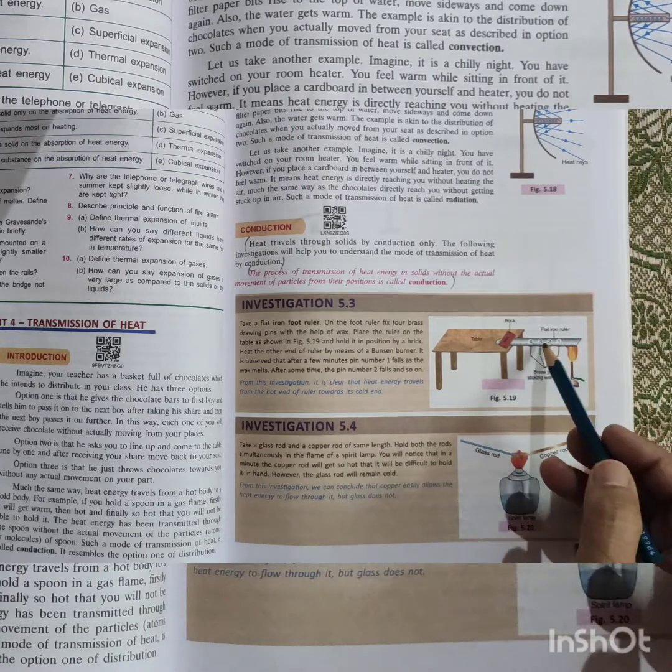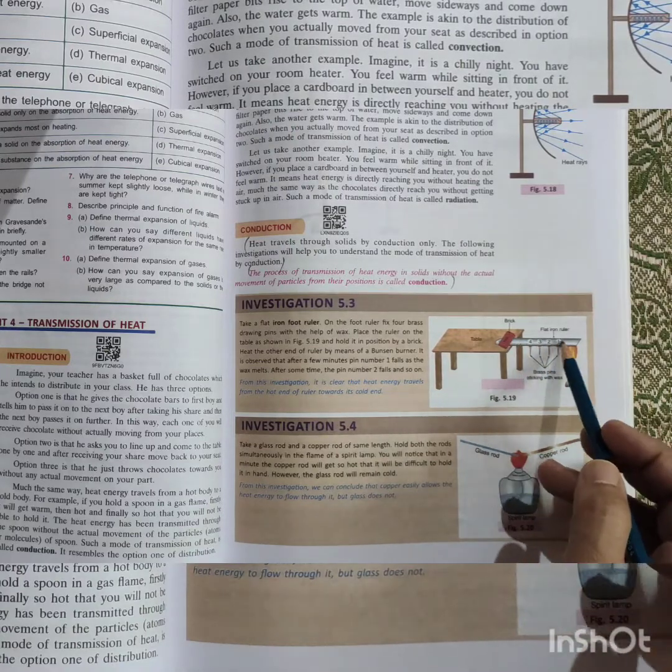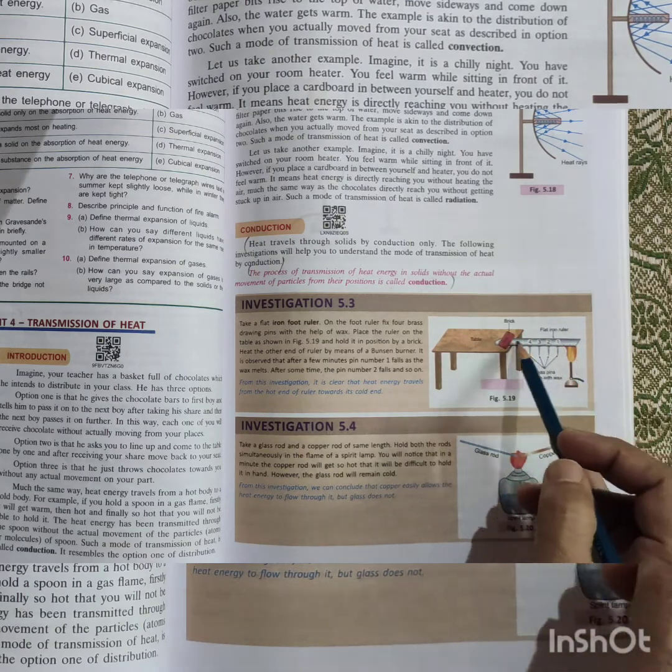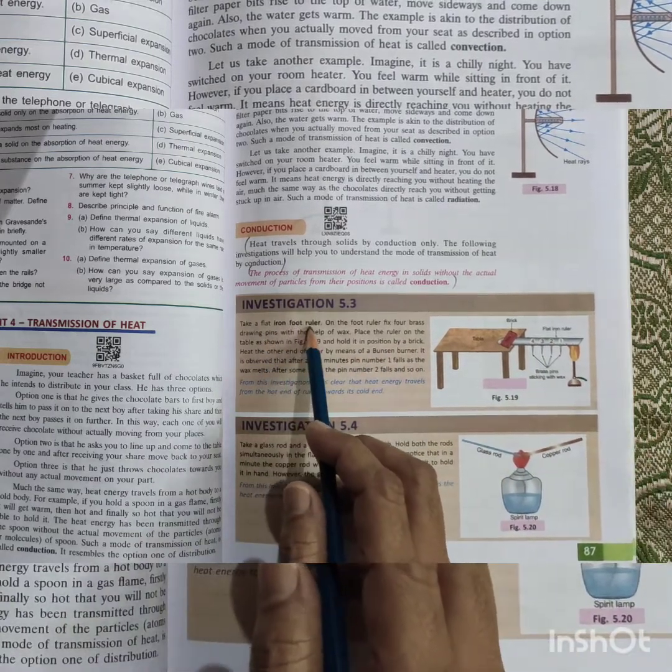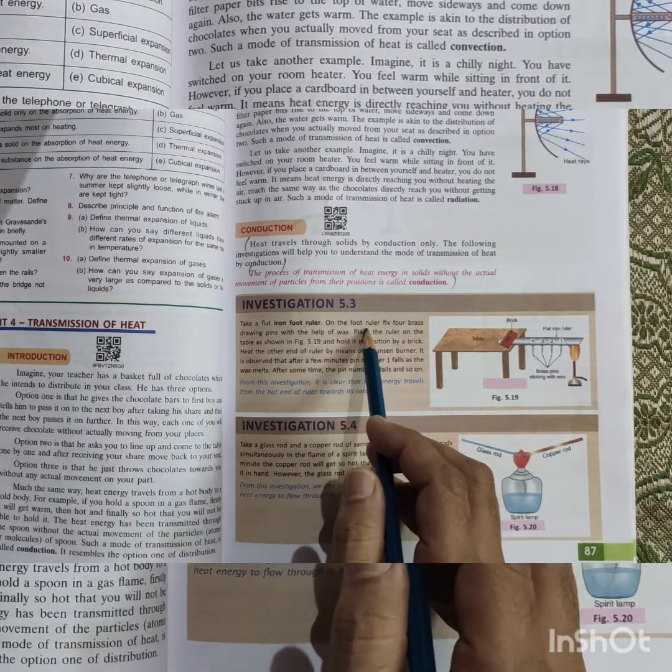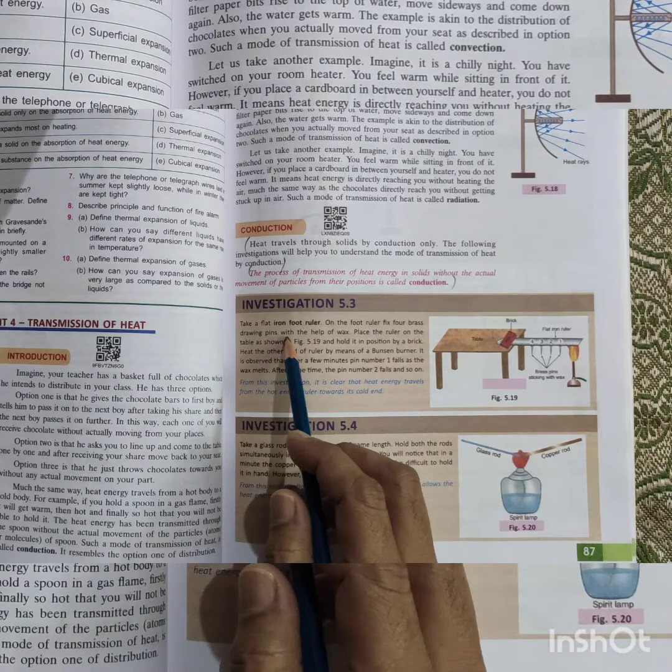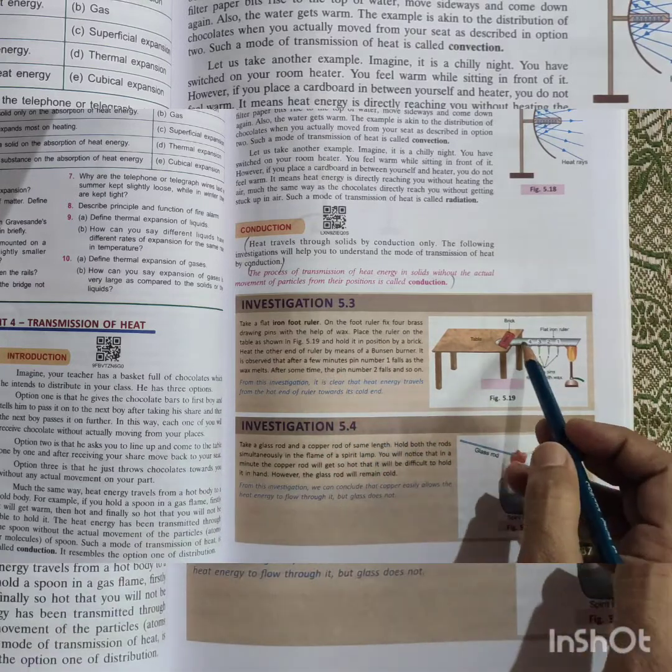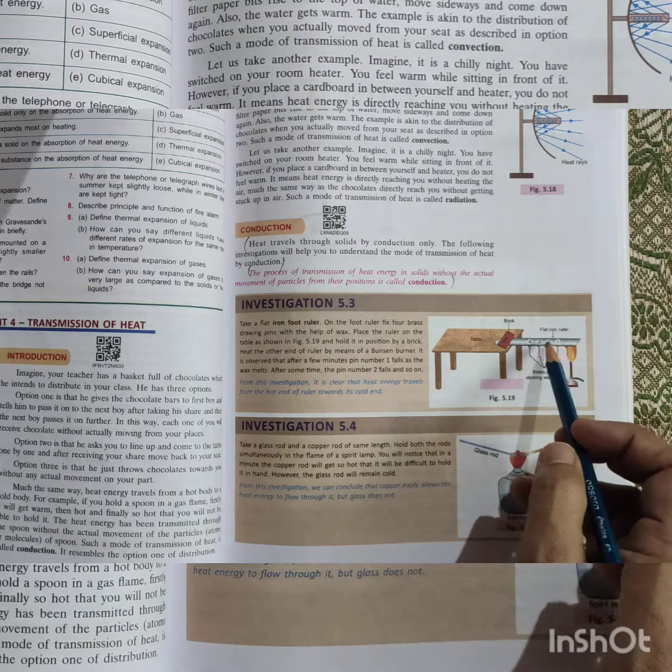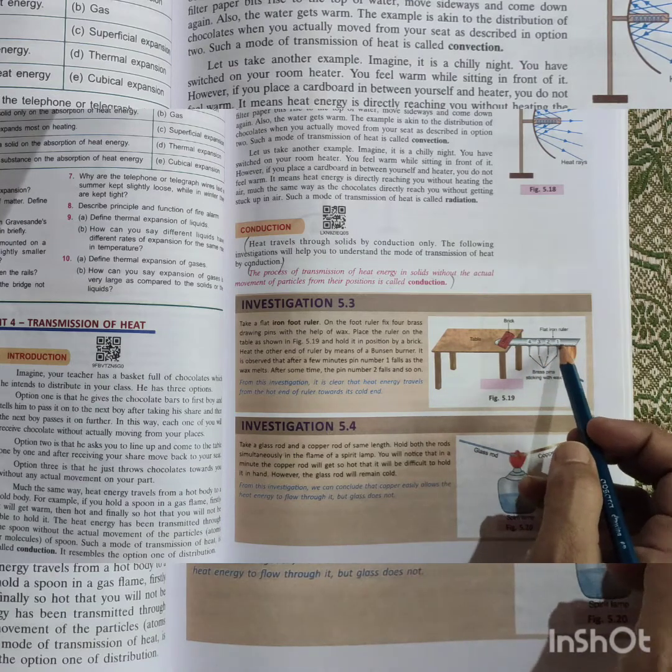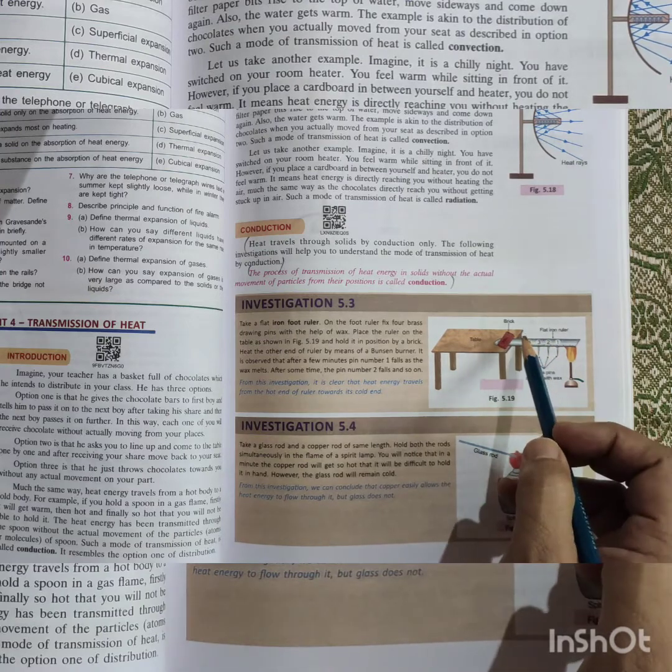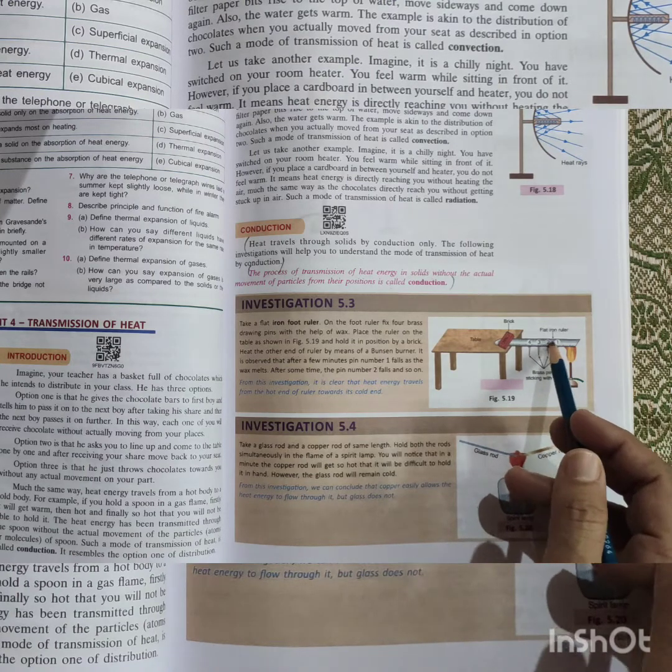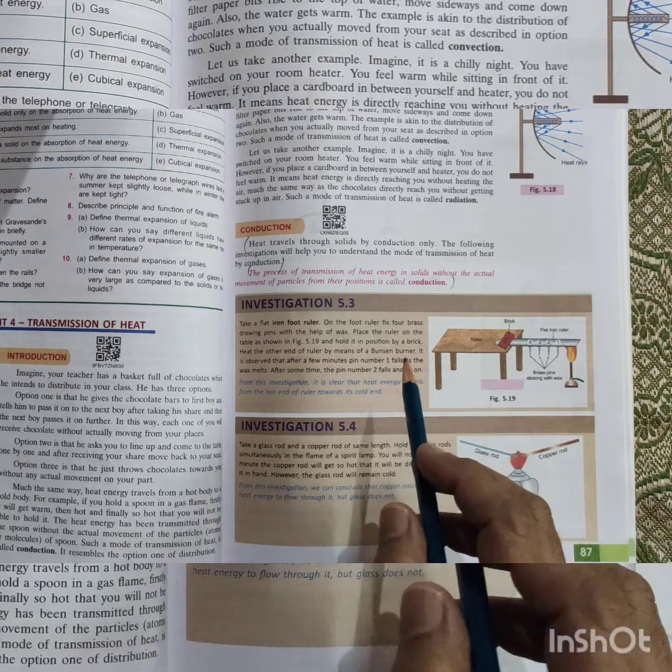Here two investigations are given. One uses a solid iron ruler through that flame, giving heat here and fixing it this way. What is given? I'll just read out: Take a flat iron foot ruler. On the foot ruler, fix four brass drawing pins with the help of wax. Place the ruler on the table. We will see that the ruler is not moving. Only when by heating, particle to particle is heated time to time. This is the way of heating a solid without the actual movement of the particles from their position. It is called conduction.